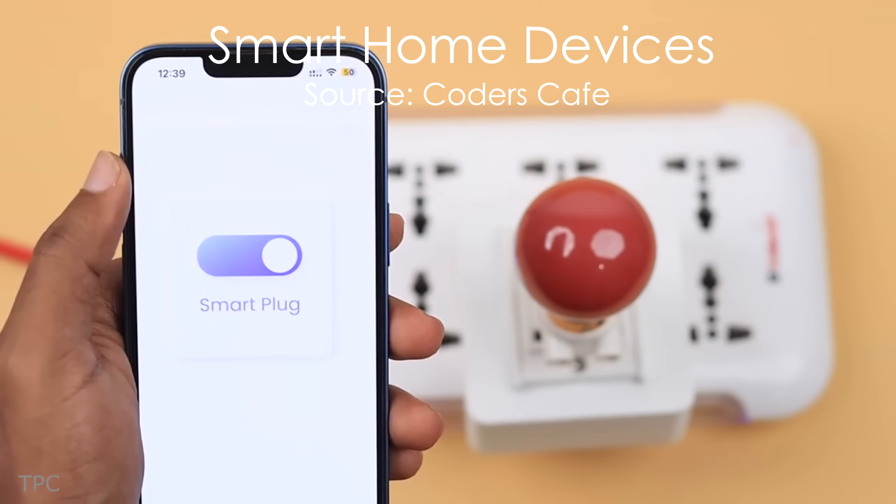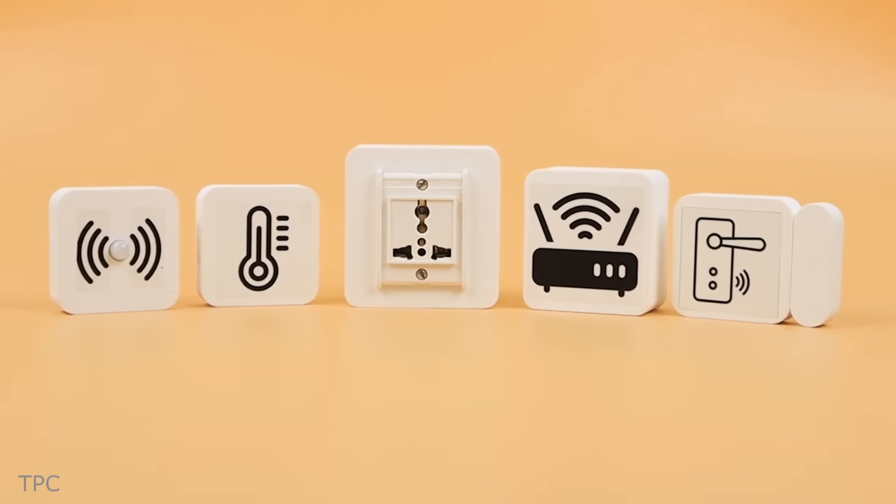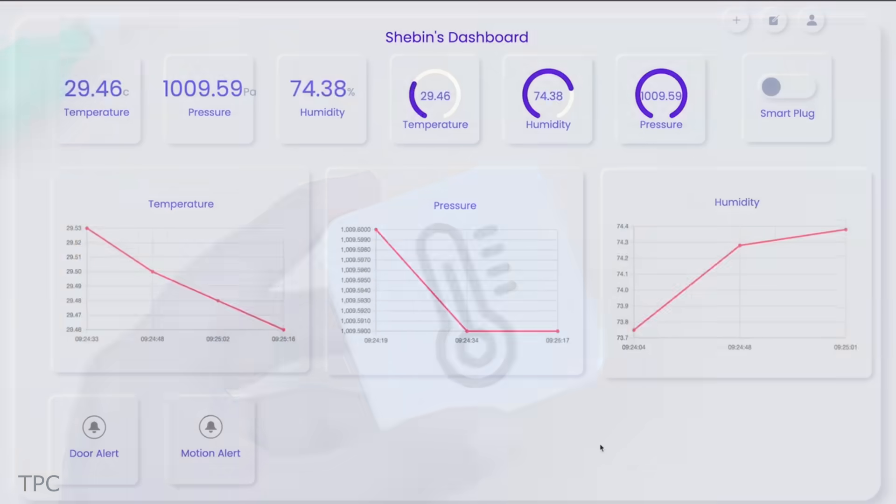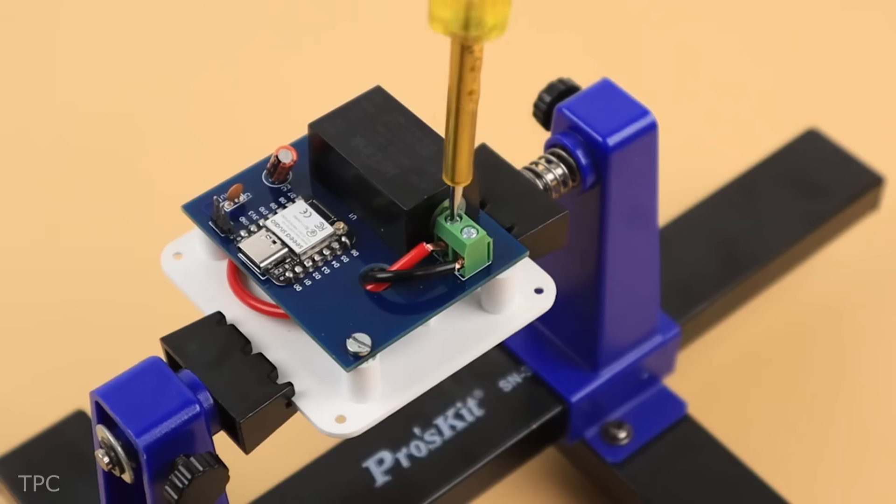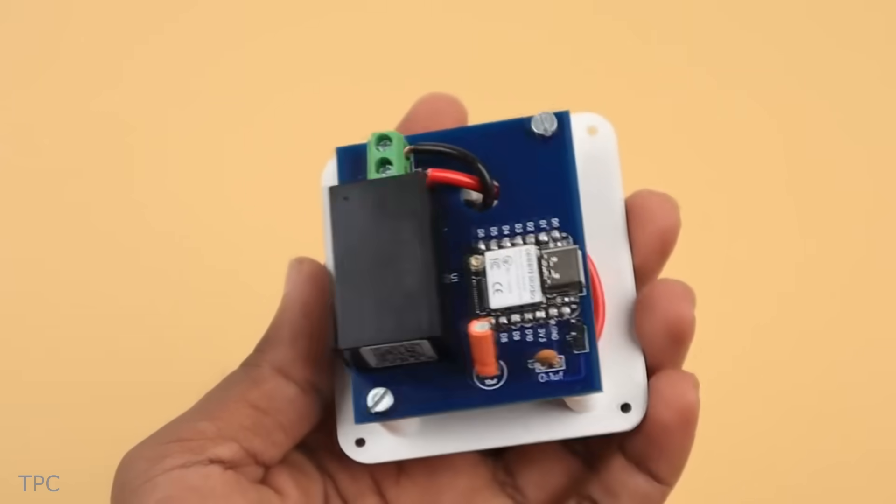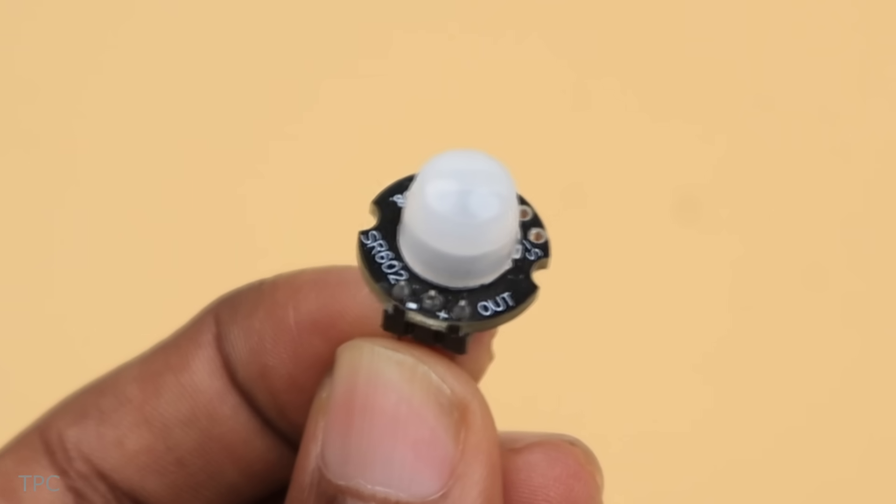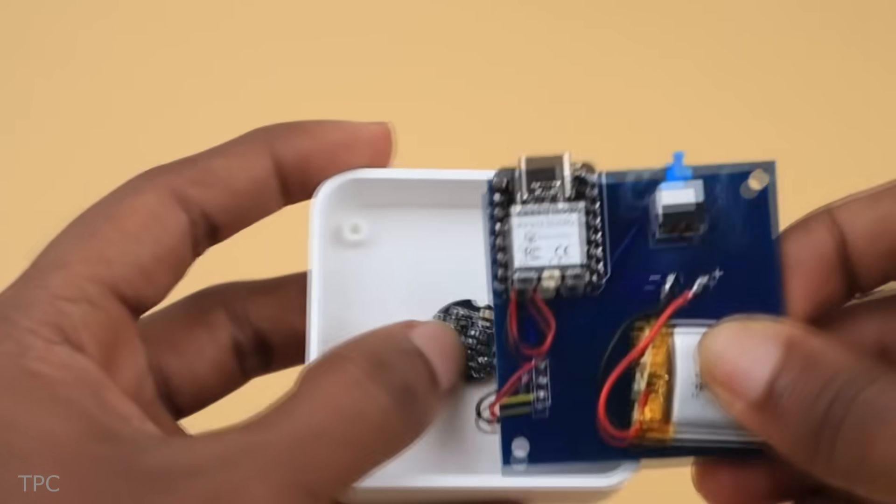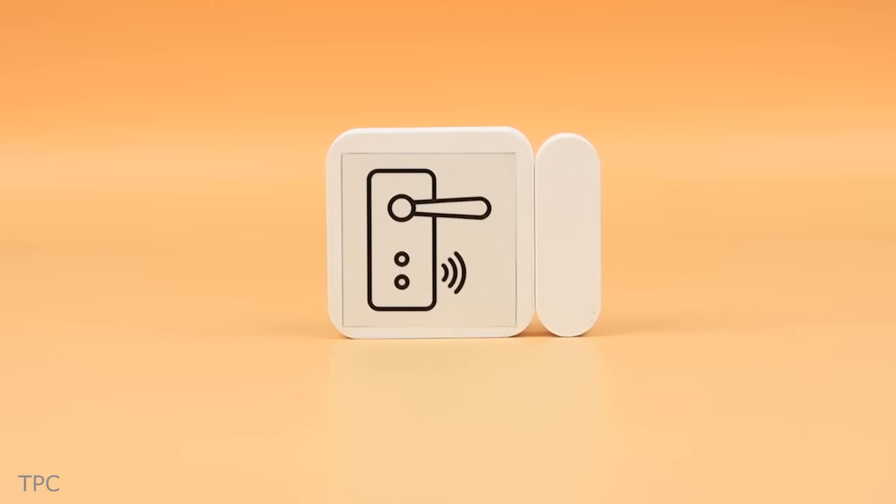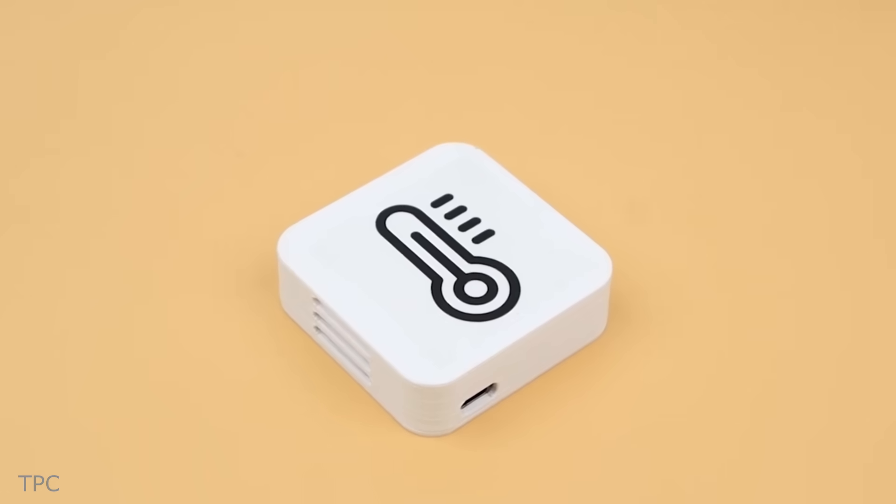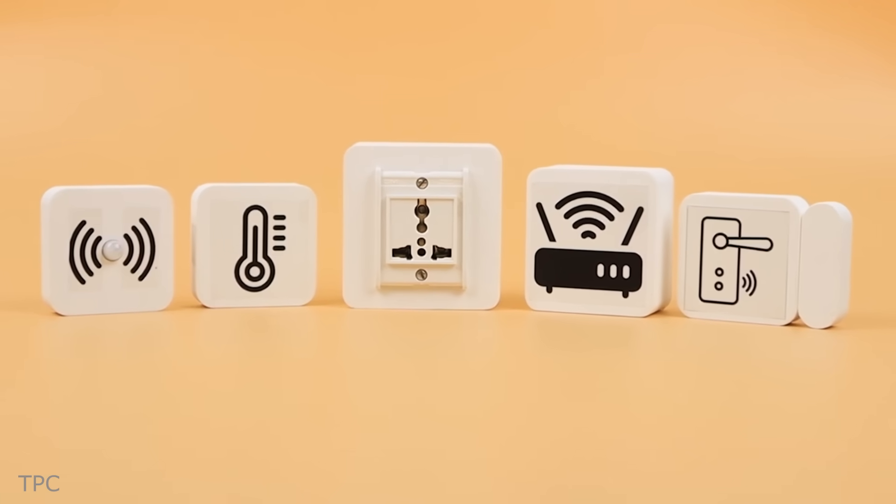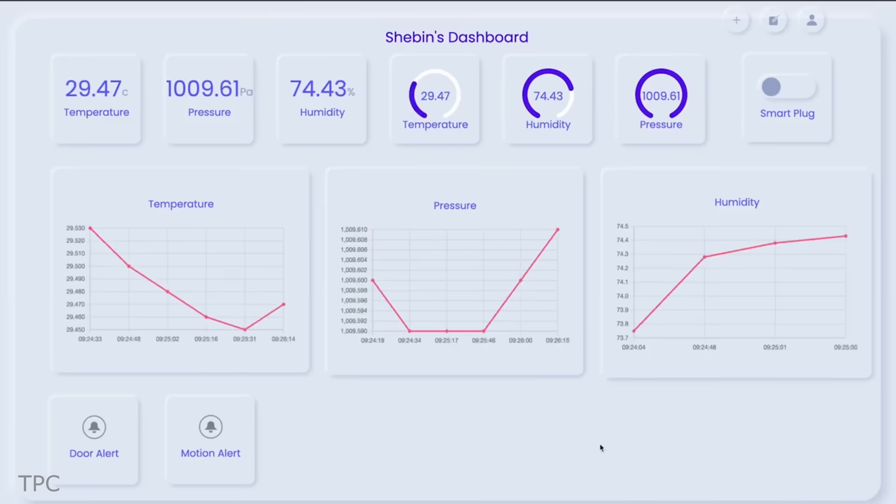To simplify home automation, the Coder's CAFE team has come up with these unique, easy-to-place devices that can turn a regular home smart, without touching the existing house wiring. All these modules consist of a microcontroller and some sensors, performing a specific task. For instance, this node consists of a motion sensor that only wakes the ESP-32 from deep sleep when a motion is detected.